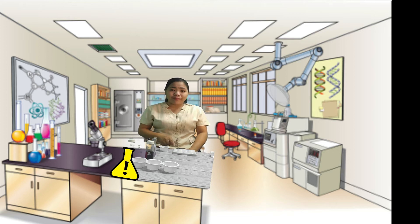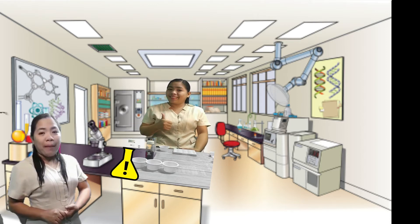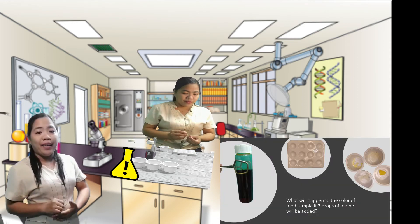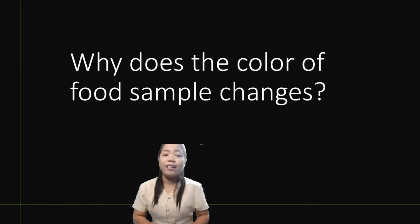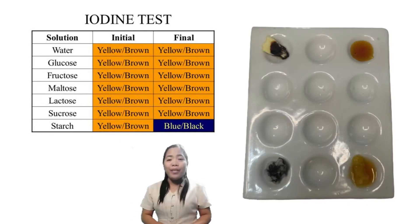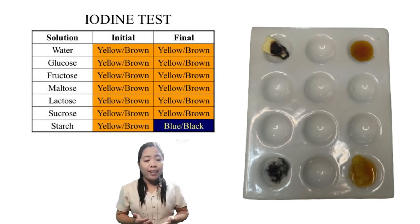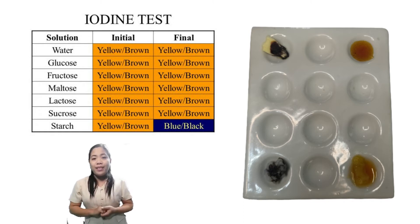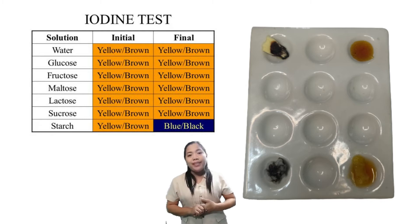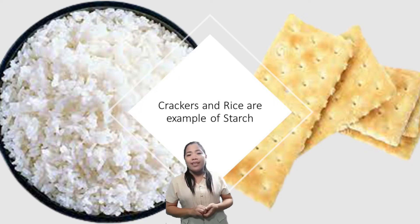Today we are going to perform an experiment — the iodine test for the different types of sugar carbohydrates — and observe what will happen if we add three drops of iodine to each food sample. Why does the color of the food sample change? Iodine was added to each food sample to test for the presence of starch. If iodine turns blue or black, it is possible to distinguish starch from glucose and other carbohydrates. Based on the results, pineapple and table sugar turn yellow and orange, while rice and crackers turn black and blue. Therefore, we can conclude that rice and starch are examples of polysaccharides.